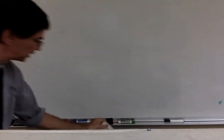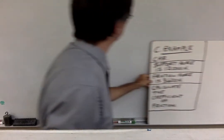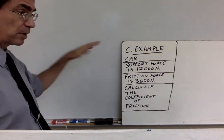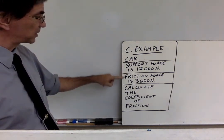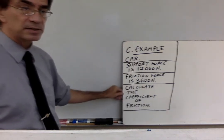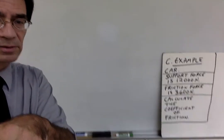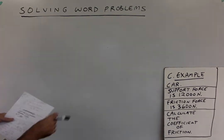All right, we're going to do an example using this GUEPS method. And here's the example problem. I made it extremely simple, so we don't have to worry about how complicated it is. We're just going to focus on the method. Here's a car, here's the support force and the friction force they're given, and that's what they want you to find, the coefficient of friction. So I'm going to push this off to the side and solve this problem using the GUEPS method that I just had on the board.